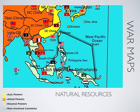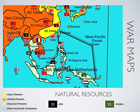Natural resources on the map: the black boxes are oil, the red boxes are coal, the maroon boxes are iron ore, and the green boxes are rubber.